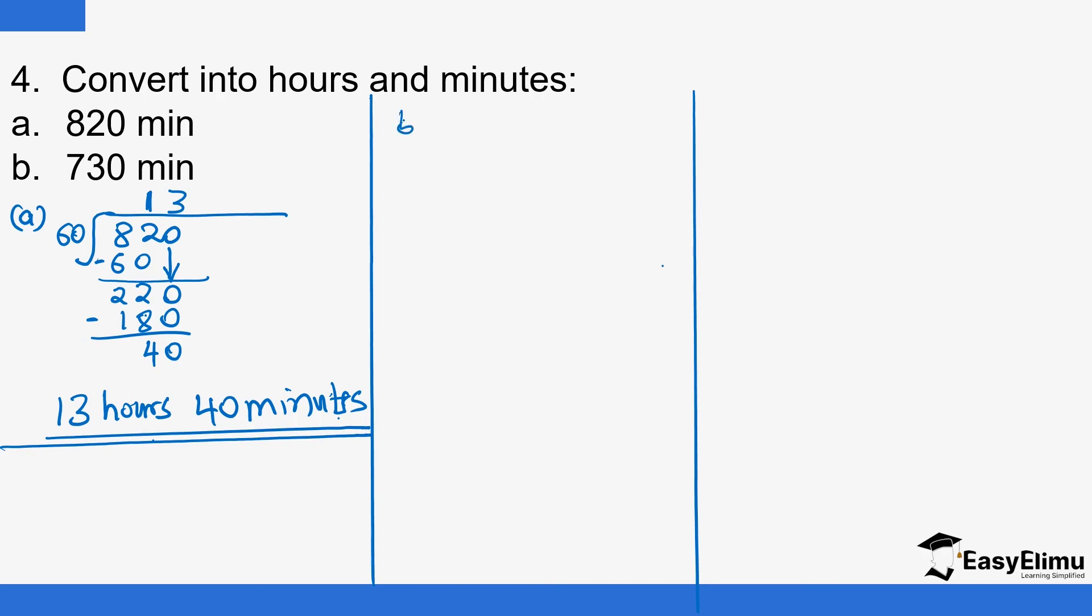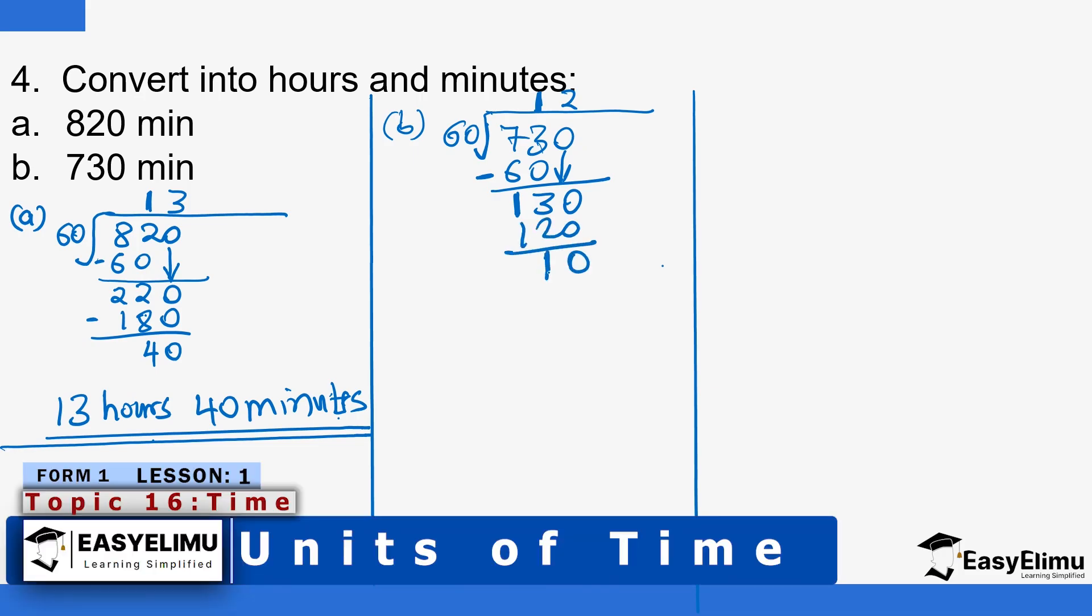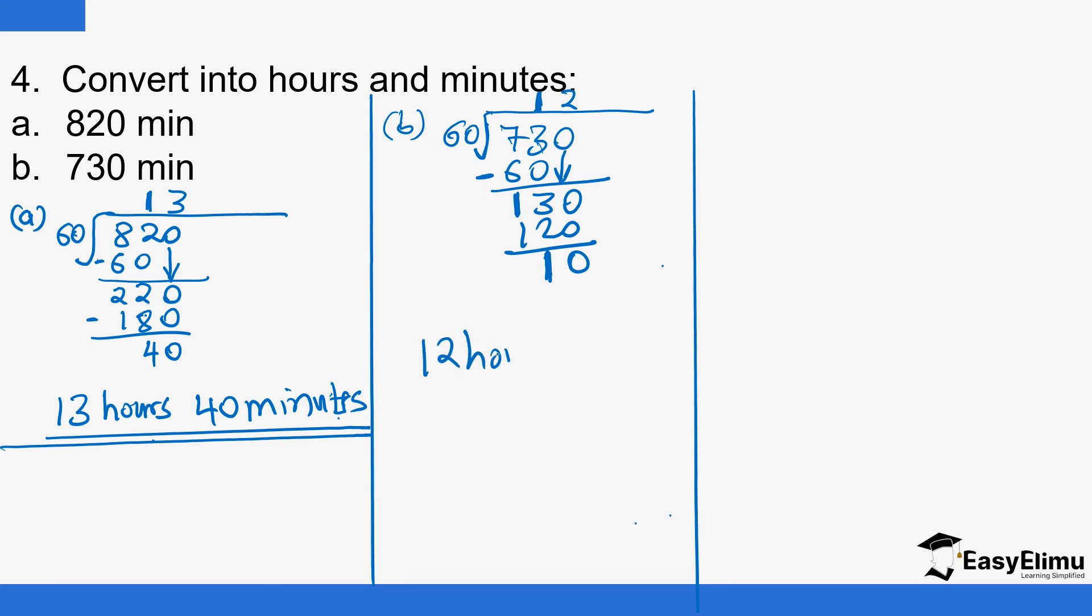For 730 minutes, same process using long division. 60 goes into 73 once, 1 times 60 is 60, leaving 13. Drop the zero to get 130. 60 goes into 130 two times - 2 times 60 is 120. Subtracting gives remainder 10. So we have 12 hours 10 minutes.